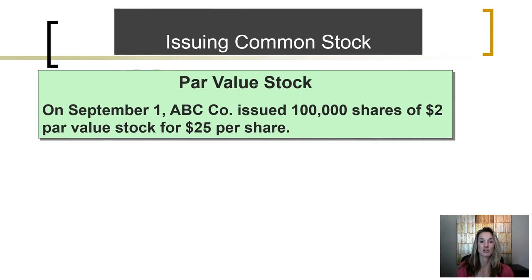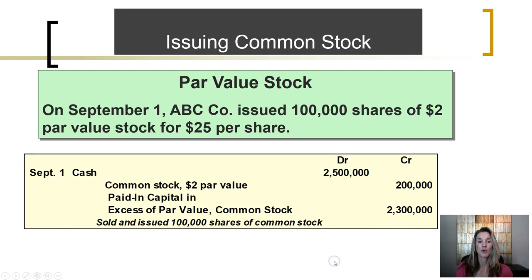Let's look at the journal entry for the issuance of common stock. On September 1st, ABC issued 100,000 shares of $2 par value stock, and the stock was sold for $25 per share. The company needs to record the cash received, which is the number of shares times the selling price of $25 per share — $2.5 million. We need to debit cash to increase it. We are going to record just the par value in the stock account: 100,000 shares times the $2 par value gives a total par value of $200,000.